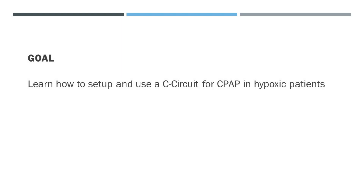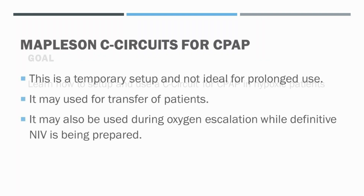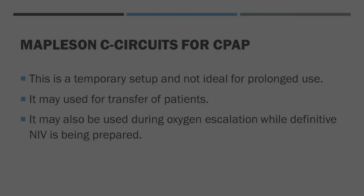In this video, we will learn how to set up and use a C-circuit for continuous positive airway pressure ventilation in hypoxic patients. Mapleson C-circuits can be used for continuous positive airway pressure ventilation. However, this is a temporary setup and is not ideal for prolonged use. It may be used for transfer of patients as well as during oxygen escalation while definitive non-invasive ventilation is being prepared.